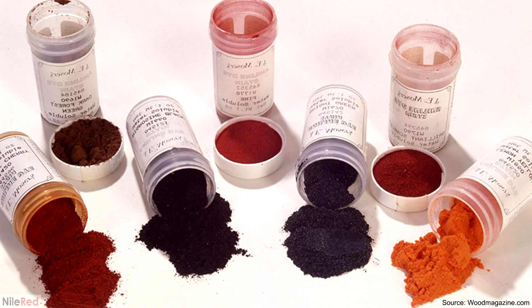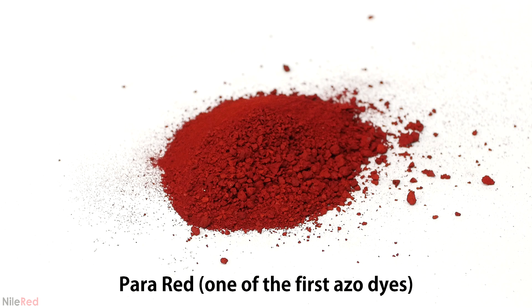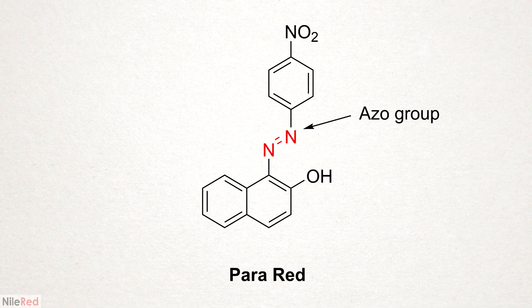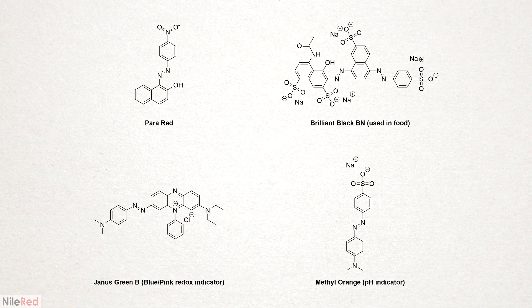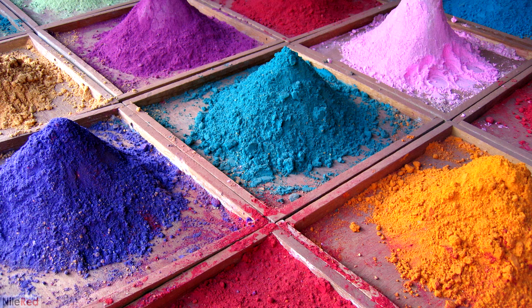This discovery led to the creation of a whole bunch of other aniline-based dyes, and it marked the beginning of the synthetic dye industry. Not too long after, a new class of dyes called azo dyes were discovered. They were still derived from aniline, but they had this characteristic nitrogen-nitrogen double bond known as an azo group. By changing the attachments on either side of the azo group, it's possible to generate a wide range of colors, making this class of dye one of the most popular.